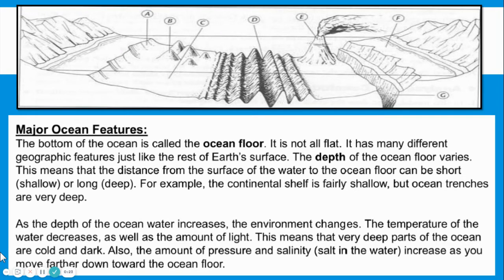The bottom of the ocean is called the ocean floor. The ocean floor isn't flat and it has different geographic regions like the rest of Earth's surface. The depth of the ocean varies, meaning it can be shallow or deep. As the depth increases, the environment changes — the temperature can decrease as well as the amount of light, so really deep parts of the ocean are cold and dark. Also, the amount of pressure and salinity, the salt in the water, increases as you move down toward the ocean floor.